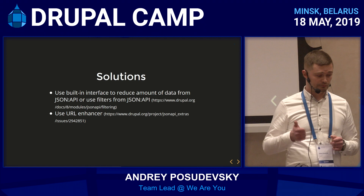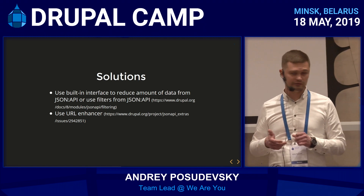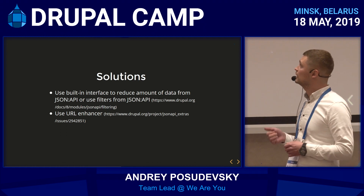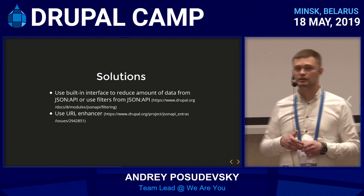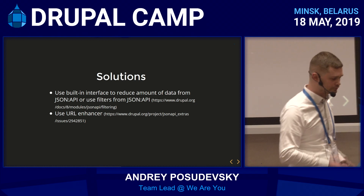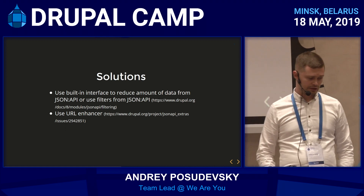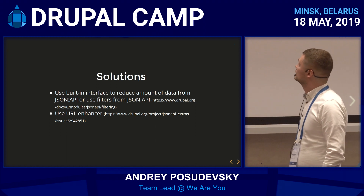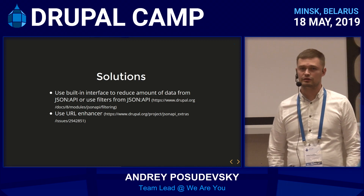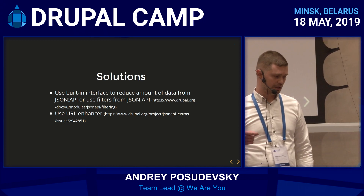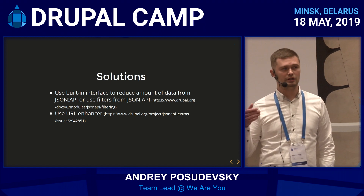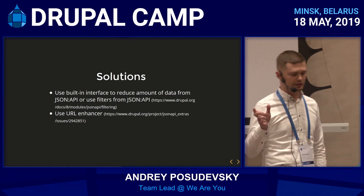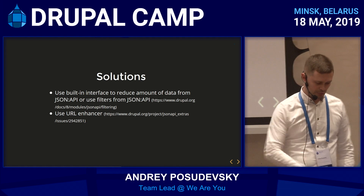You can also use filters — I would prefer using both if you have something to filter. Both gatsby-source-drupal and the JSON API module have pretty decent documentation about this. For the second problem, you can use URL enhancer. It's basically a patch for the JSON API extras module. In the admin interface of JSON API you can select how to export the link, and with the enhancer it will return the absolute URL, which can be understood by Gatsby.